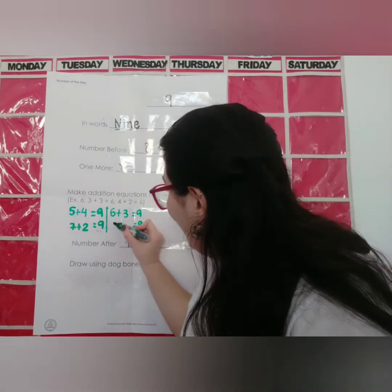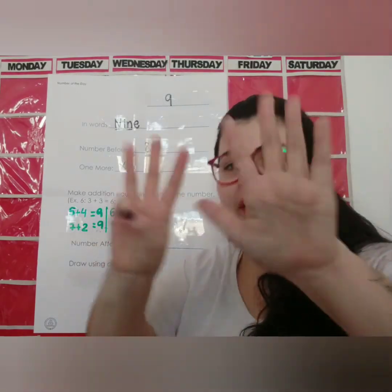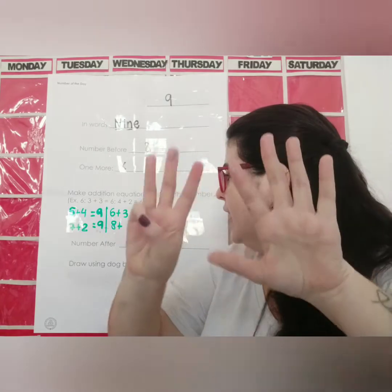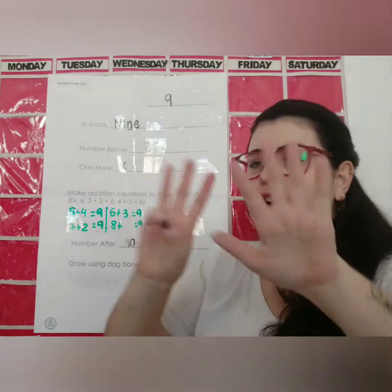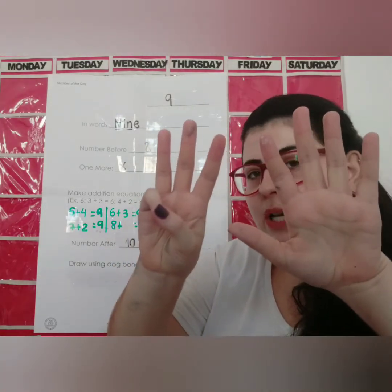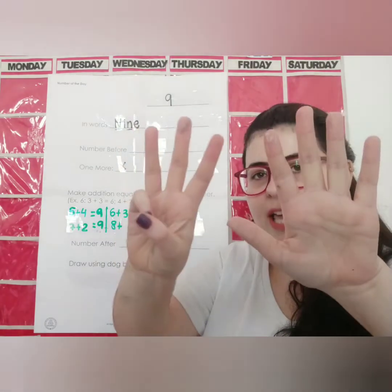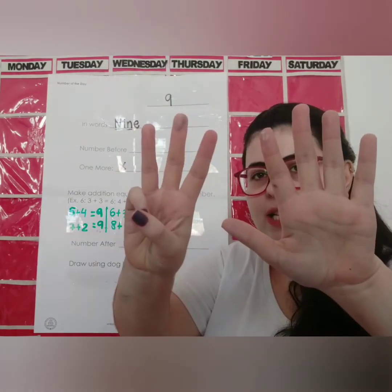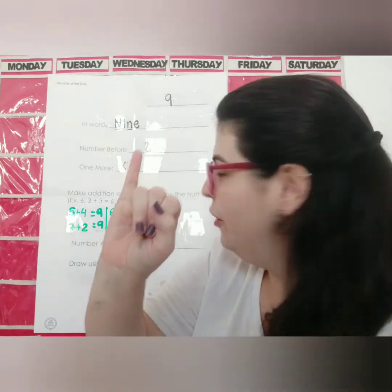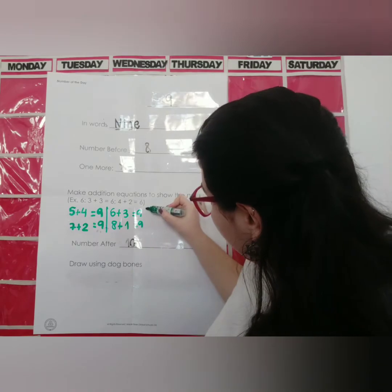Now, when you write 8 here — look, we have 8, 8 numbers, 8 fingers. 8 plus 1 number: 8, 9. So, we only have 1 more. 8 plus 1.